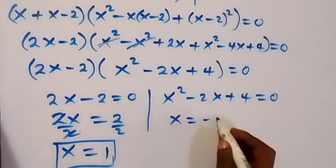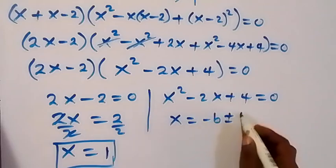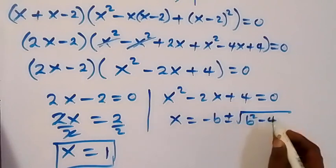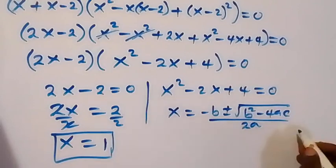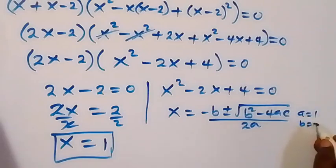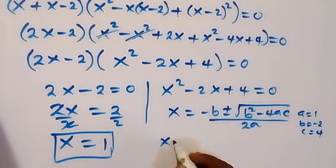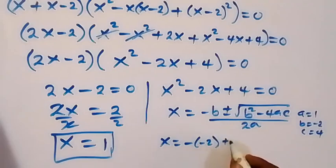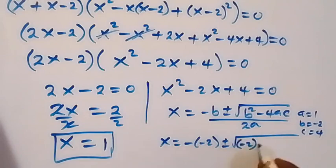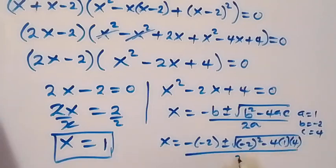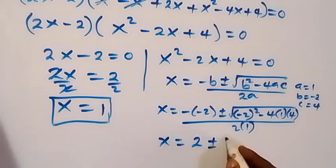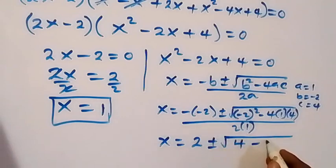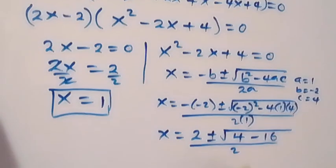For the other sub-case, we use the quadratic formula: x equals minus b plus or minus square root of b squared minus 4ac, over 2a. Here a equals 1, b equals minus 2, c equals 4. So x becomes 2 plus or minus square root of (4 minus 16), over 2.